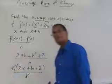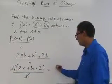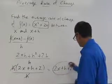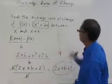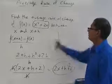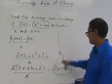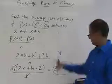Notice this h was cancelled with this h. And so what we end up with is 2x plus h plus 2. And that's the average rate of change of f of x between x and x plus h for this function, x squared plus 2x. My average rate of change is 2x plus h plus 2.